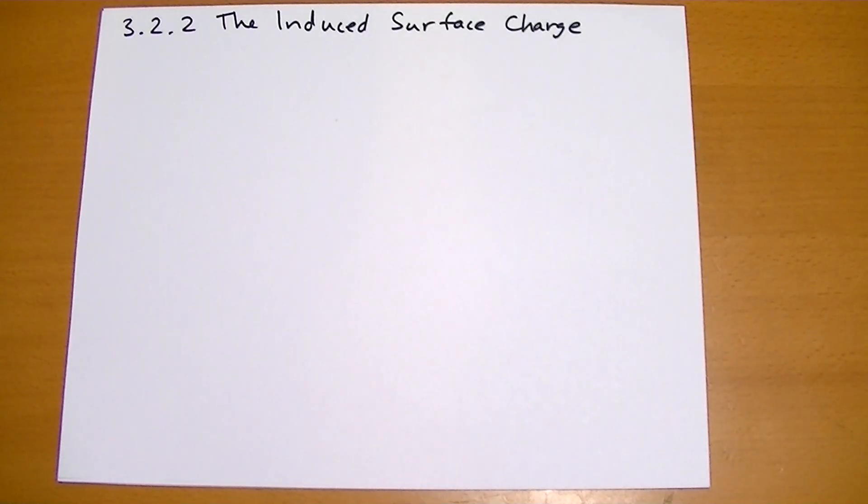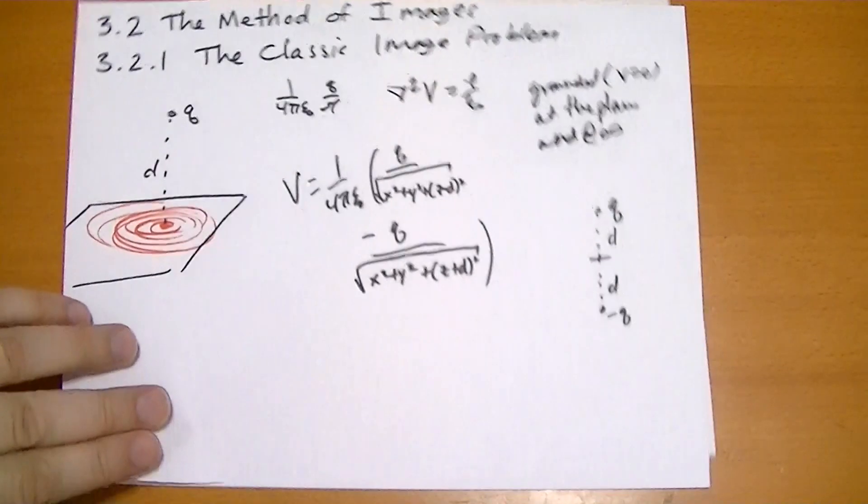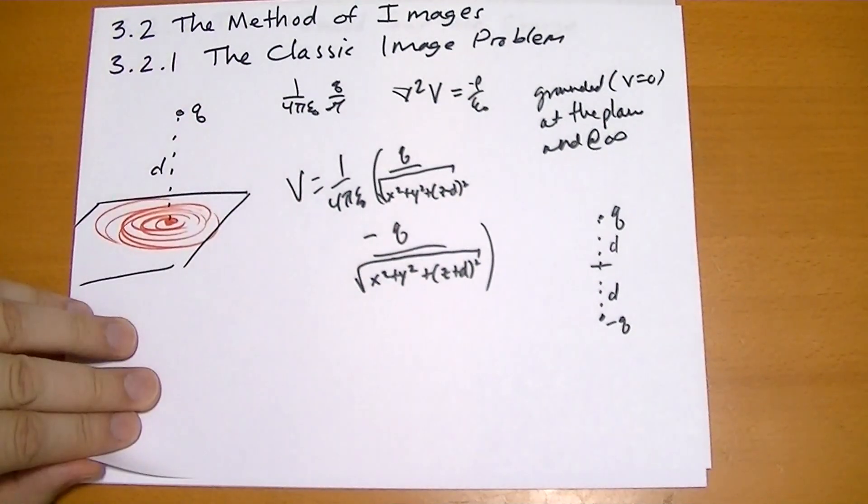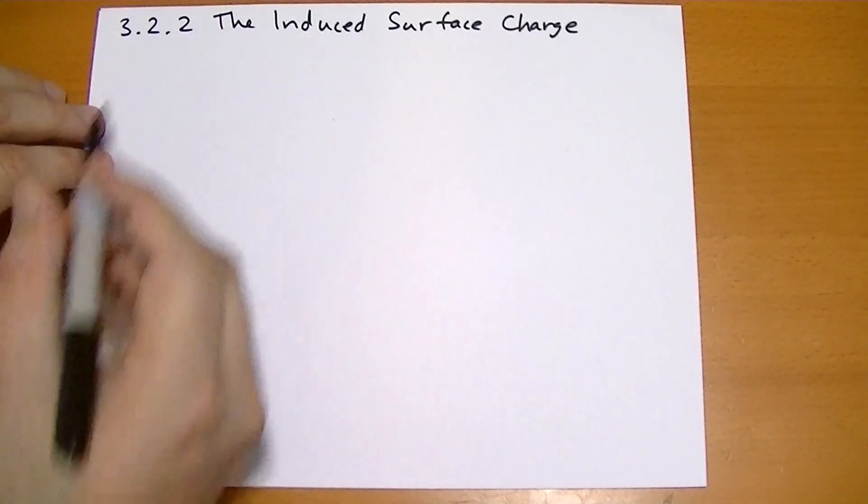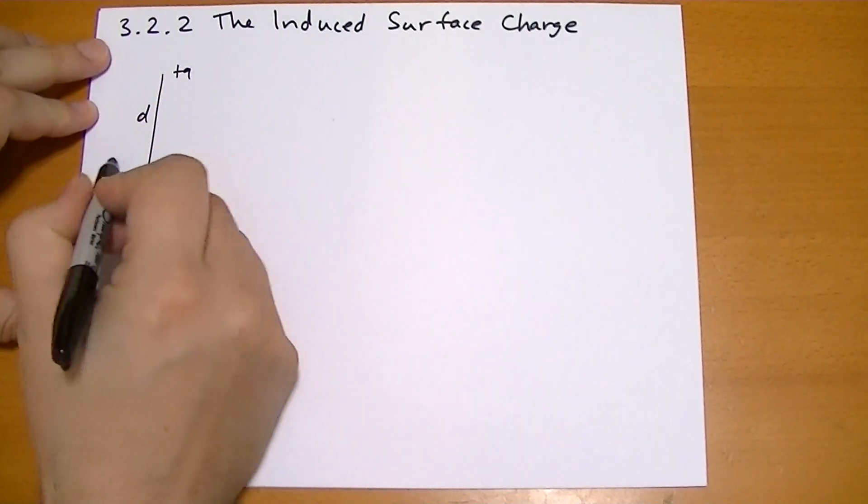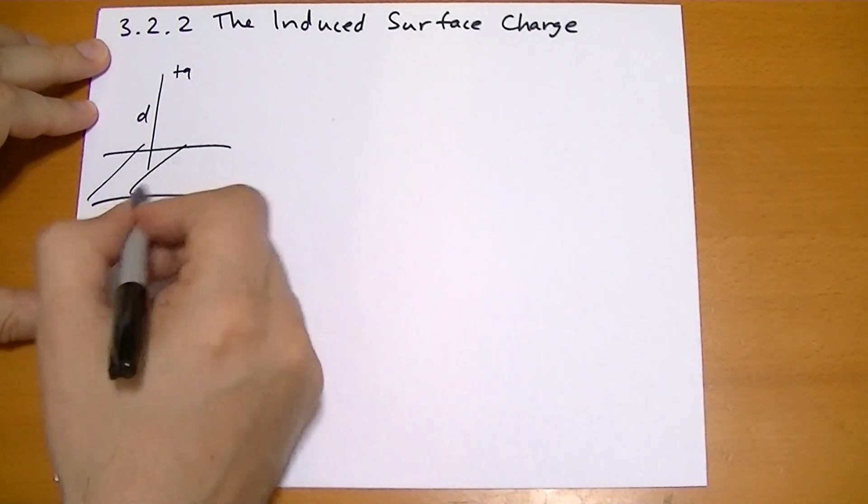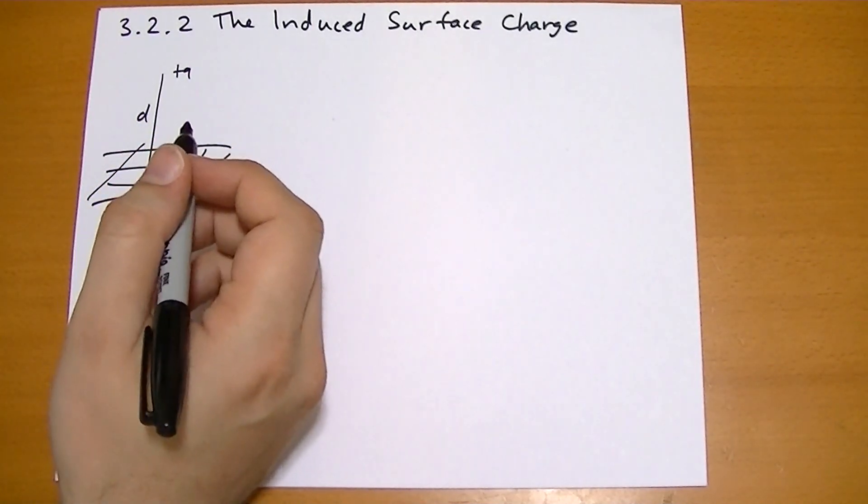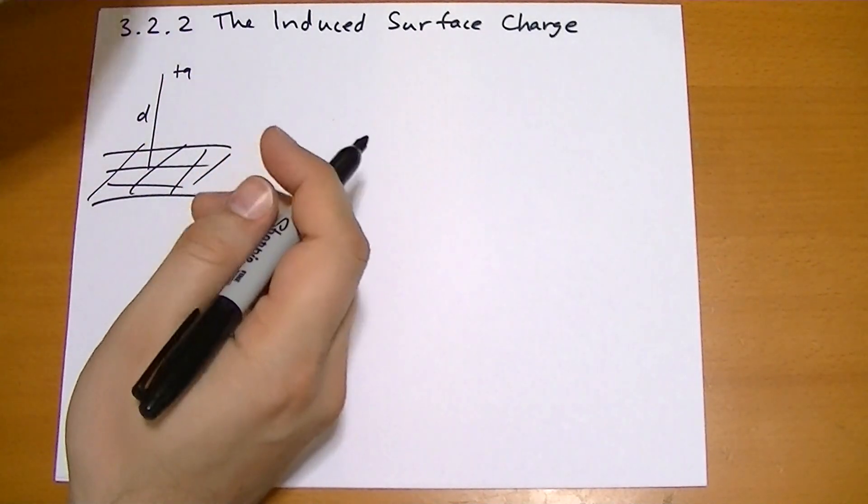Section 3.2.2. So we just solved the potential for this by writing down an equation that happened to solve the boundary conditions for a completely different problem. Let me recap. We have a charge plus q, a distance d above some infinite plane. The potential at the plane is zero, the potential at infinity is zero.